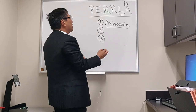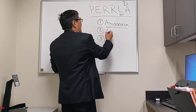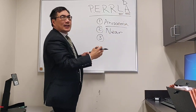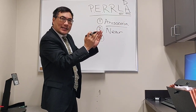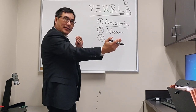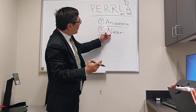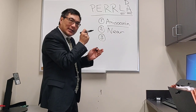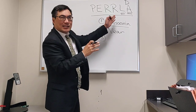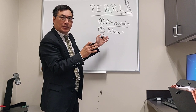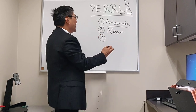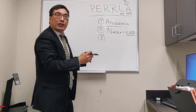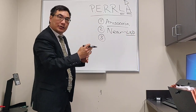We need to be looking at the near reaction. Even though it's called PERLA, accommodation is the change in the shape of the lens. Really what we're trying to test is the synkinetic response to a near target. We're testing response to light and near — and that is called light-near dissociation, when there's a difference between the light and the near response.